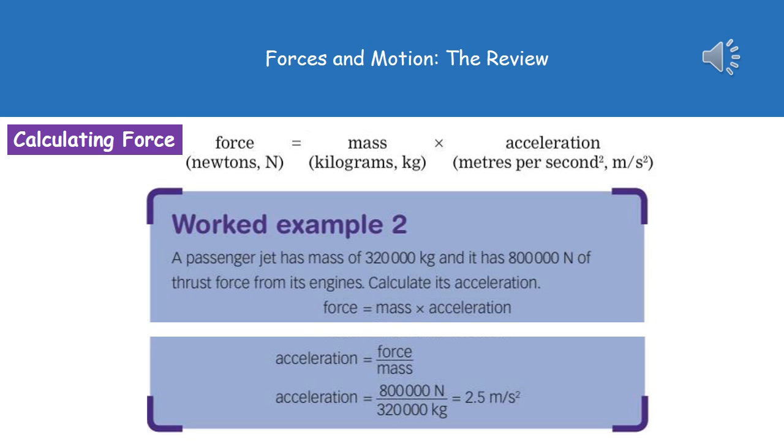If you're asked to work out something that requires you to rearrange the equation, remember the easiest way to do that is to use the triangle. An example: a passenger jet has a mass of 320,000 kilograms and it has 800,000 newtons of thrust force from its engines. Calculate its acceleration. We know that force is mass times acceleration, and if we put that into a triangle to rearrange it, the acceleration is going to be the force divided by the mass. We just put our numbers from the question in: force is 800,000 and our mass is 320,000. So 800,000 divided by 320,000 gives us the acceleration of 2.5 meters per second squared.